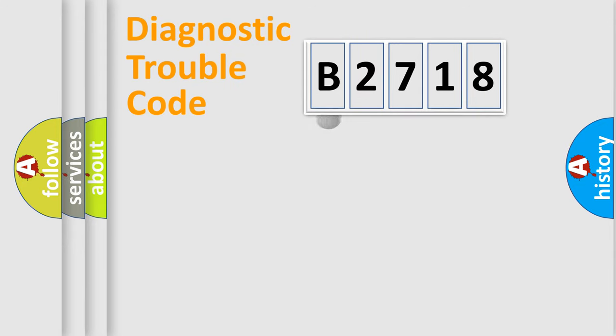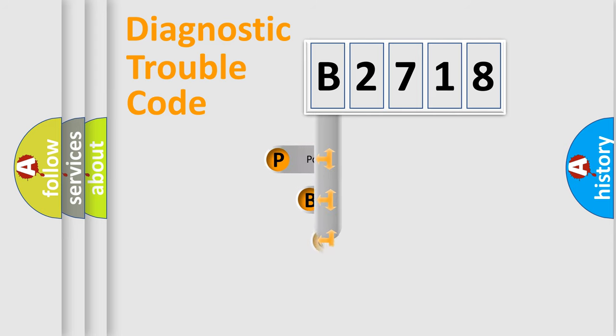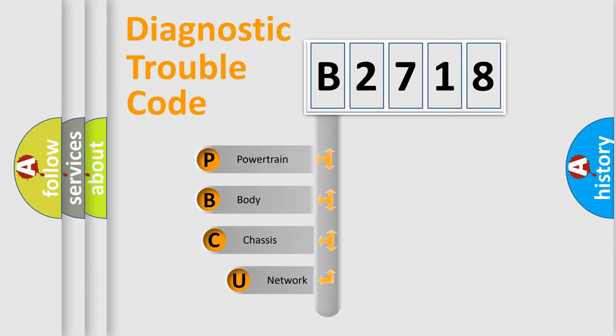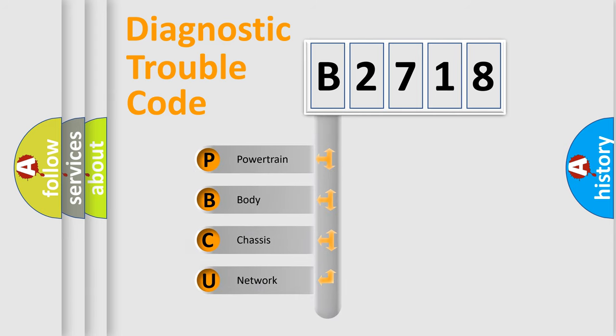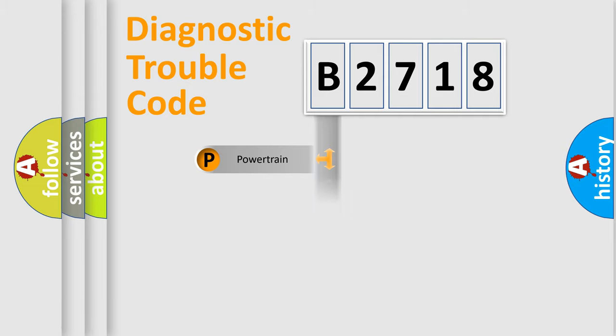Let's do this. First, let's look at the history of diagnostic fault code composition according to the OBD2 protocol, which is unified for all automakers since 2000. We divide the electric system of an automobile into four basic units: Powertrain, Body, Chassis, and Network.